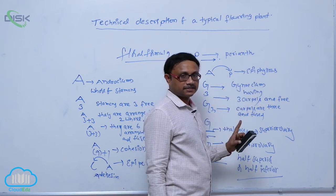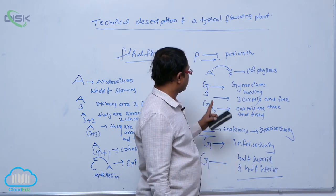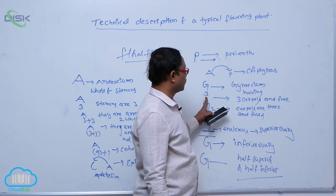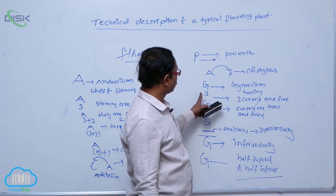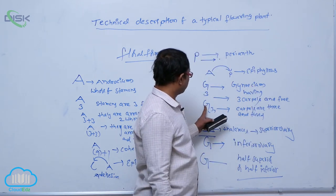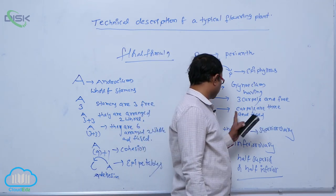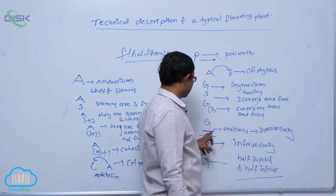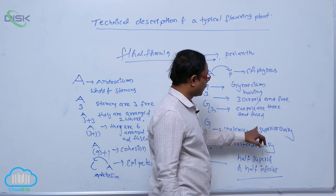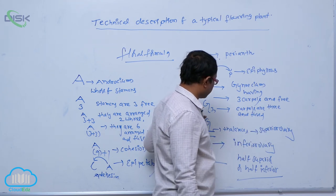G means gynoecium. The gynoecium having three carpels — without bracket, three indicates free carpels. With bracket, three indicates the carpels are united or fused. The line below indicates the thalamus. If the gynoecium is present above the thalamus, that indicates a superior ovary.